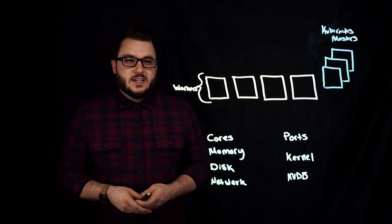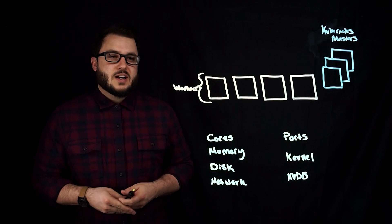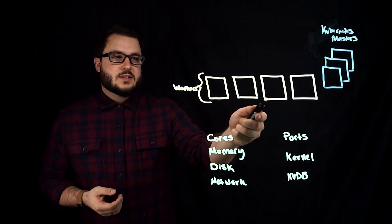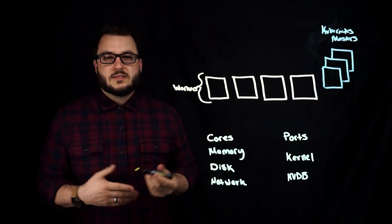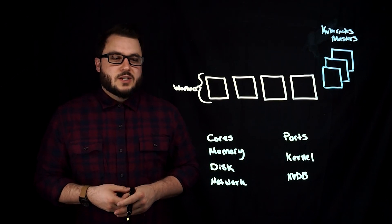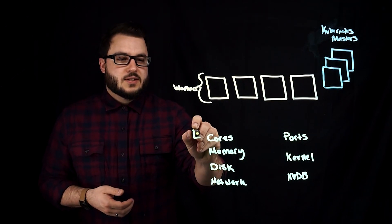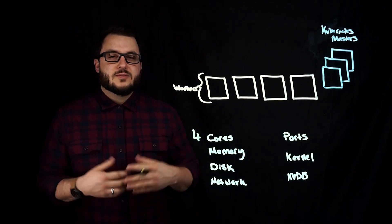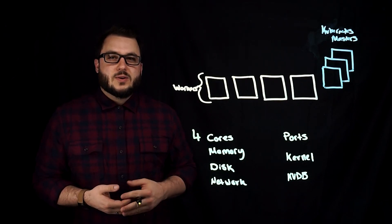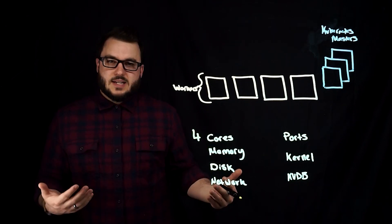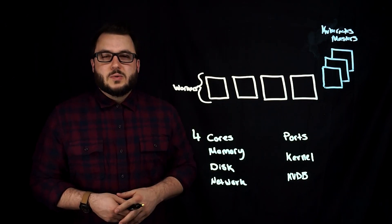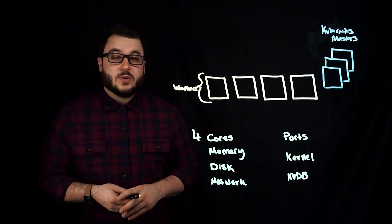Portworx itself needs a number of different resources. Each one of these worker nodes needs CPU associated with it. Whether you're in cloud or on-prem using bare metal, you want at least four cores and recommended probably more than that depending on what type of workloads you're running on each individual worker. If you're running a lot of databases, four cores is probably not enough. But the minimum we need for Portworx with some applications on it is four cores.